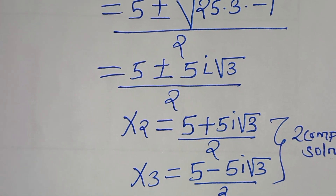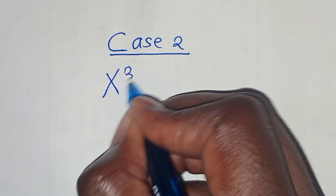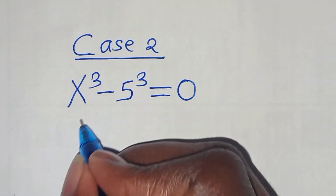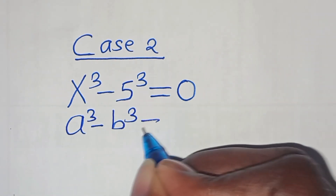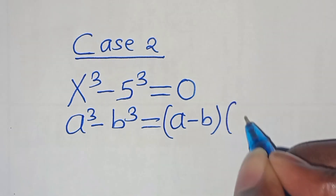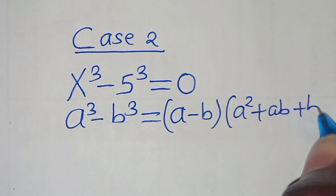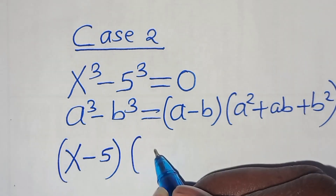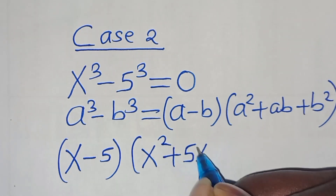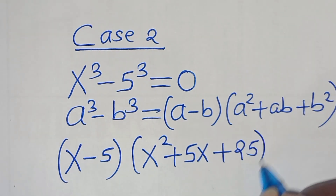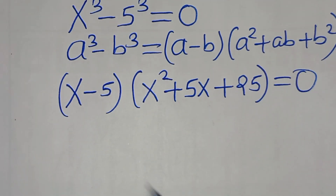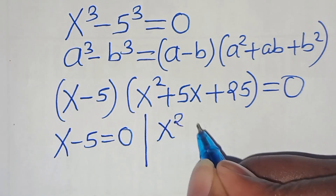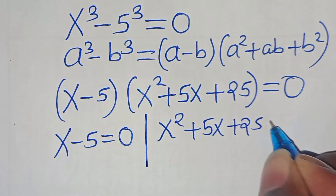Proceeding to case 2: x to the power of 3 minus 5 to the power of 3 equals 0. This is the difference of two cubes, expressed as a³ − b³ = (a − b)(a² + ab + b²). Applying the identity gives (x − 5)(x² + 5x + 25) = 0.